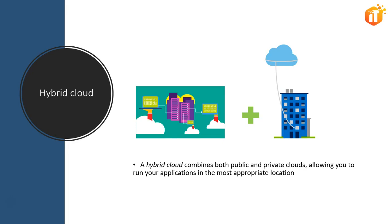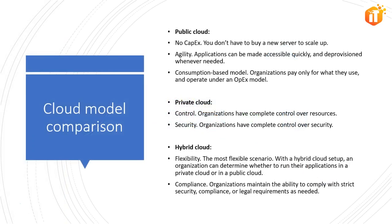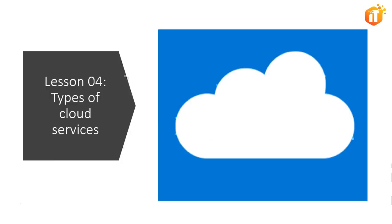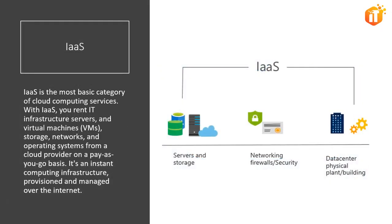Now that we have understood the different types of cloud models, let's go ahead and understand the different types of cloud services. The first is the infrastructure as a service model, then platform as a service, and furthermore software as a service. Apart from these three well-known models, there are various others like database as a service, identity as a service, and others.